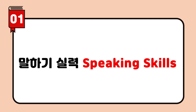Sorry, I didn't get that. What is it that you want to say? Say it all together. Everybody, all together. Say it like this. Repeat after me. I'll help you say it. In a complete sentence, please. Where are your subject and verb?